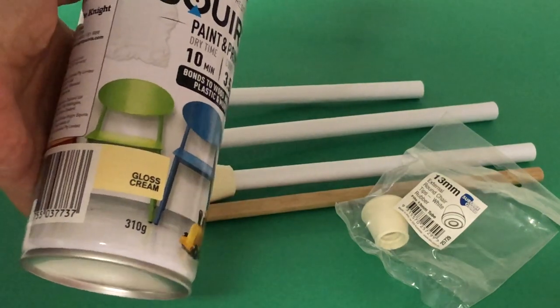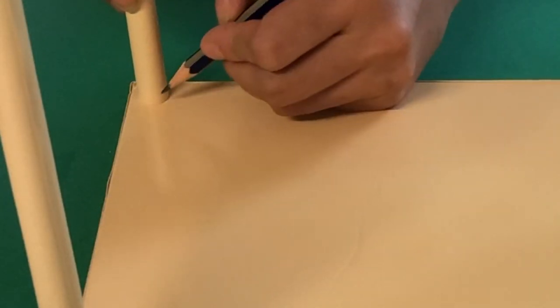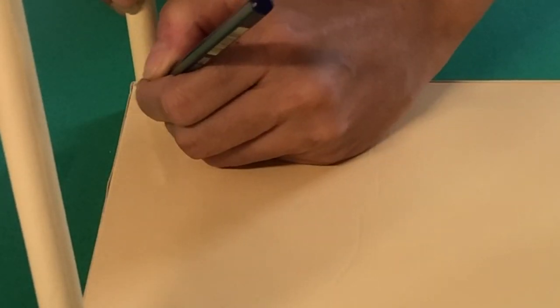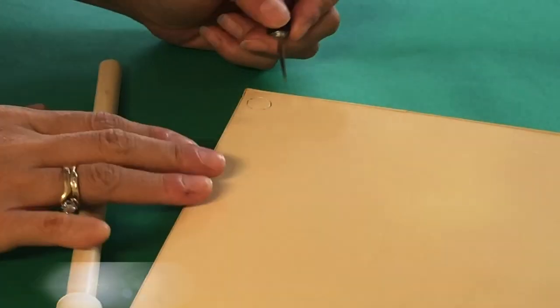Flip the table over and mark on the underside where each leg will go. You need to leave at least 27 centimeters clearance so the bench can slide under the table.